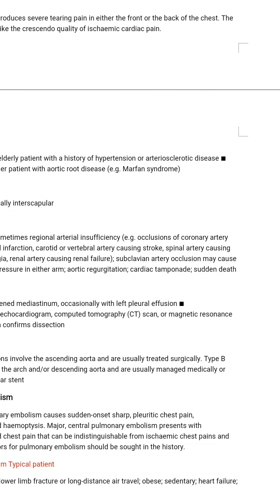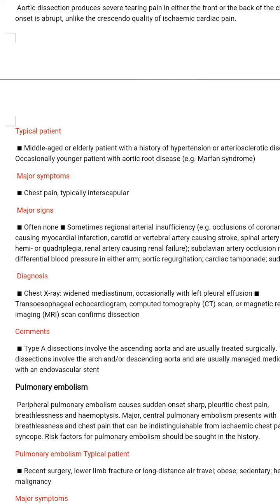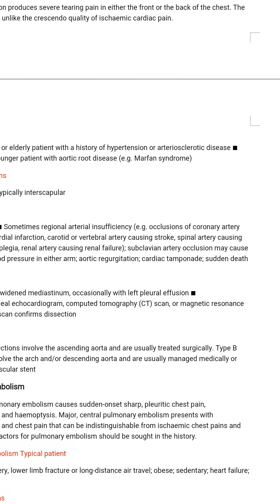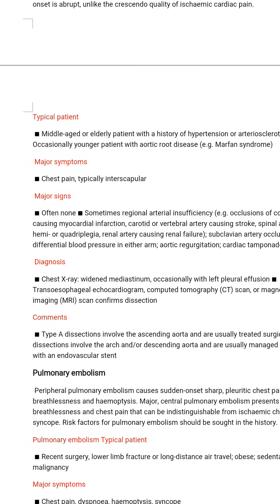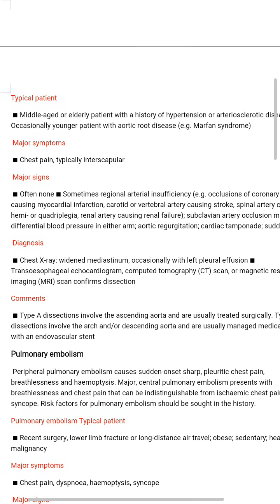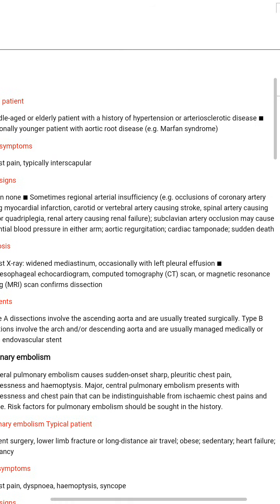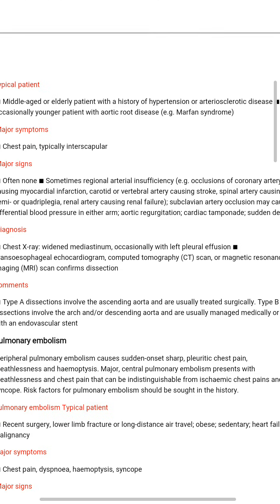Examples of regional arterial insufficiency include: occlusion of the coronary artery causing myocardial infarction; carotid or vertebral artery causing stroke; spinal artery causing hemi- or quadriplegia; renal artery causing renal failure; subclavian artery causing differential blood pressure in either arm; aortic regurgitation; cardiac tamponade; and sudden death.